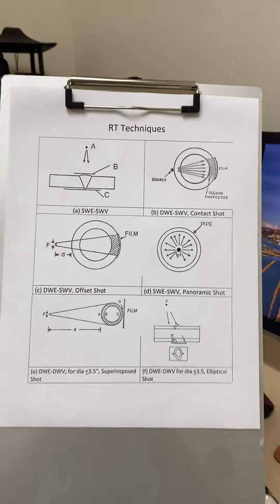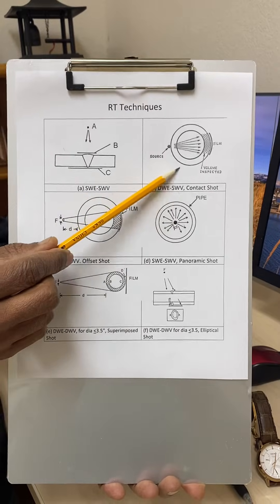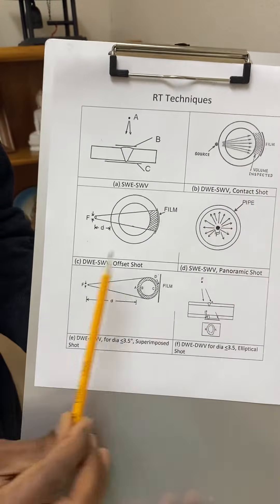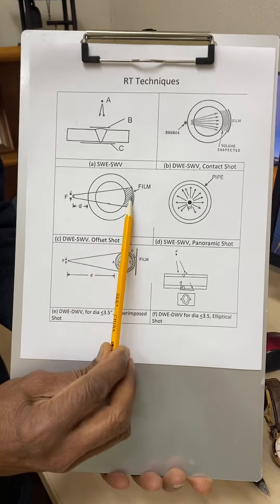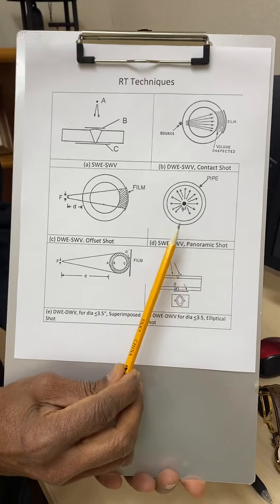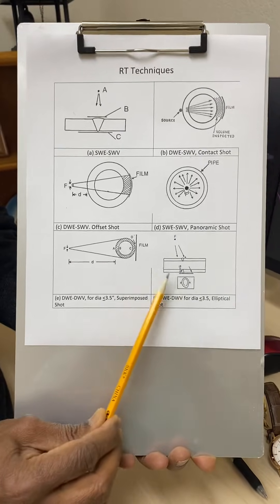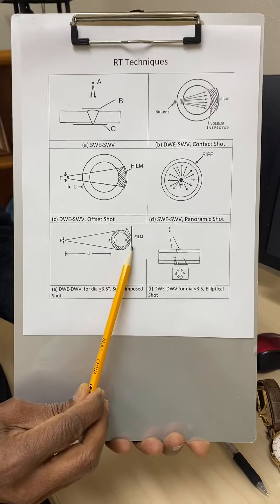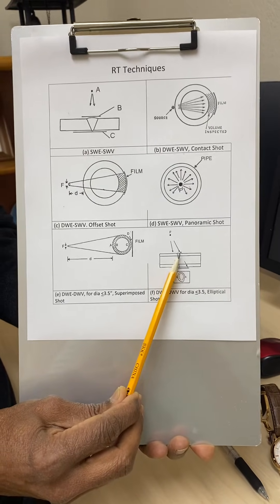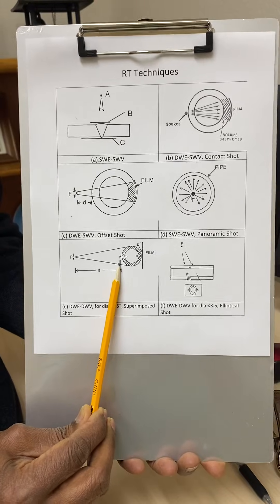We always prefer to place the IQI on the source side. In the contact shot, we cannot put the IQI inside the pipe, so the IQI will be on the outside — this is called the film side. Similarly, in the offset shot, the IQI will also be on the film side on the outside of the pipe. For the double wall exposure double wall viewing shots, the IQI will be placed on the source side — location A in both cases — not on the film side.